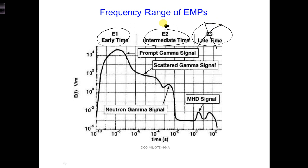The E2 component is similar to lightning, which airplanes already have some protection against, so we're not going to focus on that component either. The E1 component is the quickest, and it also has the highest amplitude electric fields, on the order of tens of kilovolts per meter. The frequency range of the E1 component is about 1 MHz to 300 MHz.